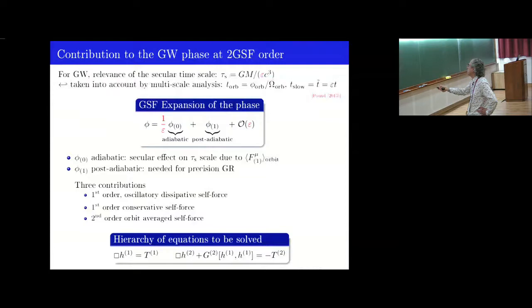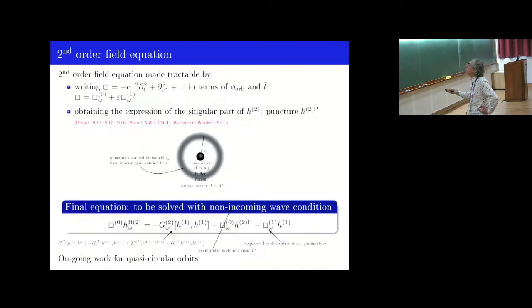So, this phi 0 is adiabatic, phi 1 is post-adiabatic, with notably the contribution of the second-order orbit average self-force. So, you have this hierarchy of equation to solve, H1 at first order. When we know H1, you inject it here, and you solve at the next order, second order, which is very difficult. To handle this equation, you must first expand the box operator, which is not flat here, in terms of epsilon. And then, you obtain an expression for the singular part of H2. And you can recast the original equation in this form, where now you solve for the regular part of H2. So, this is much easier. This can be handled only numerically. And, in fact, this part already is complicated, due to the presence of a coupling here between two puncture singular parts. But, if you treat it analytically, you can simplify the problem.